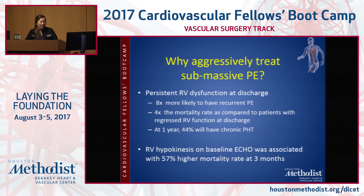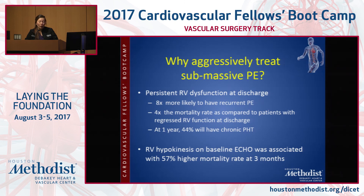More about submassive PE — why do we care about this subtype? If they have continued RV dysfunction at discharge, they are eight times more likely to have a recurrent episode and four times more likely to die compared to patients with improved RV function at discharge. At one year, almost half of them will have chronic pulmonary hypertension symptoms. RV dysfunction definitely increases your mortality rate.